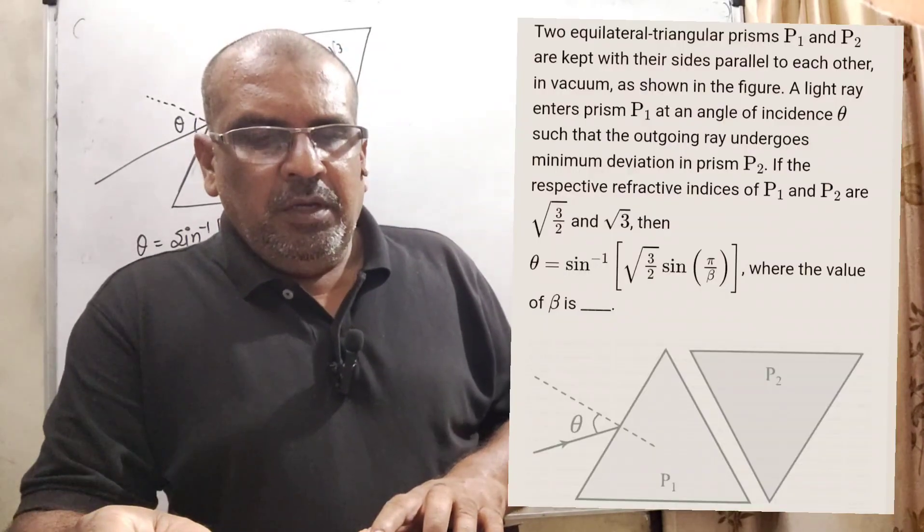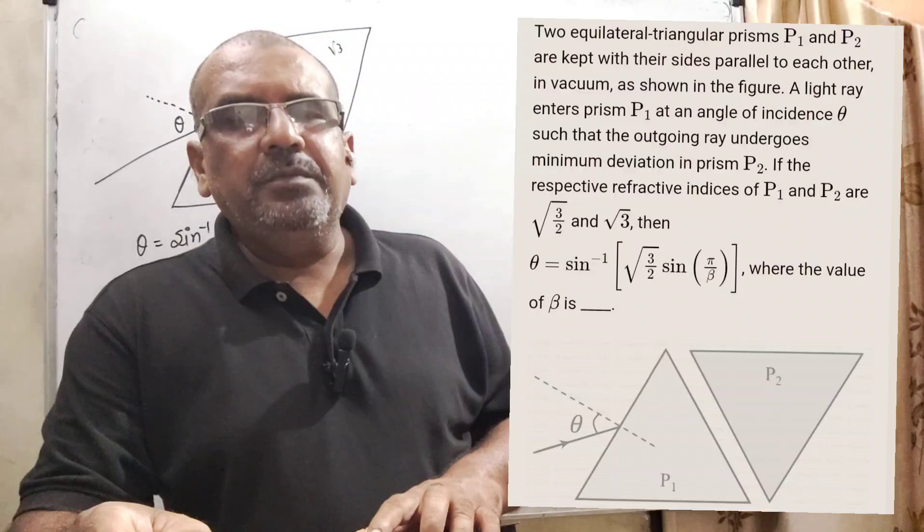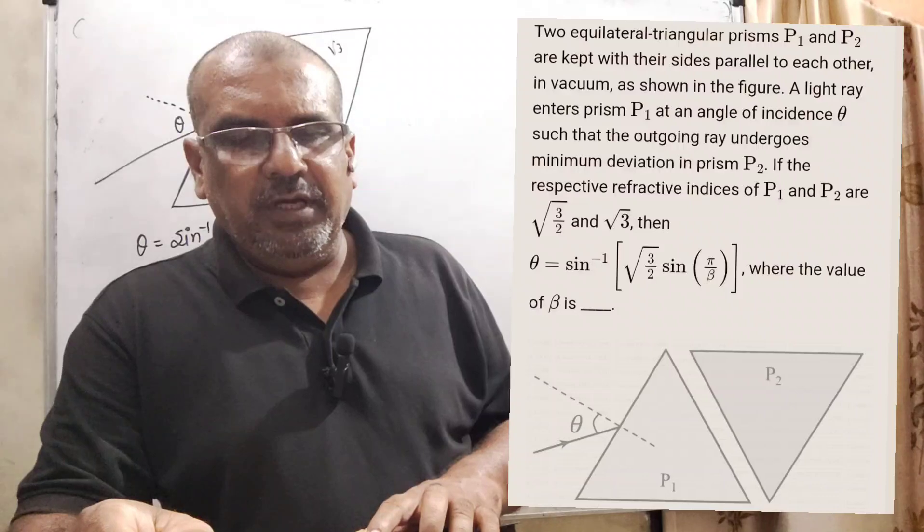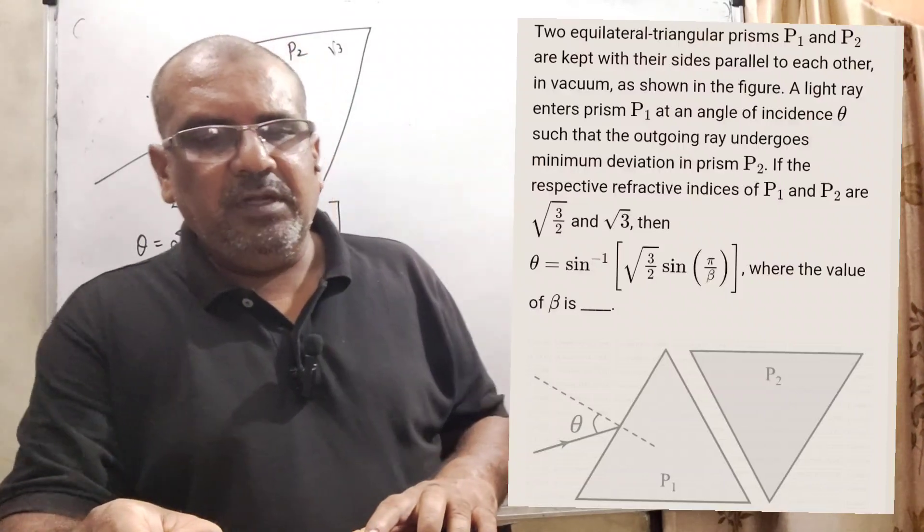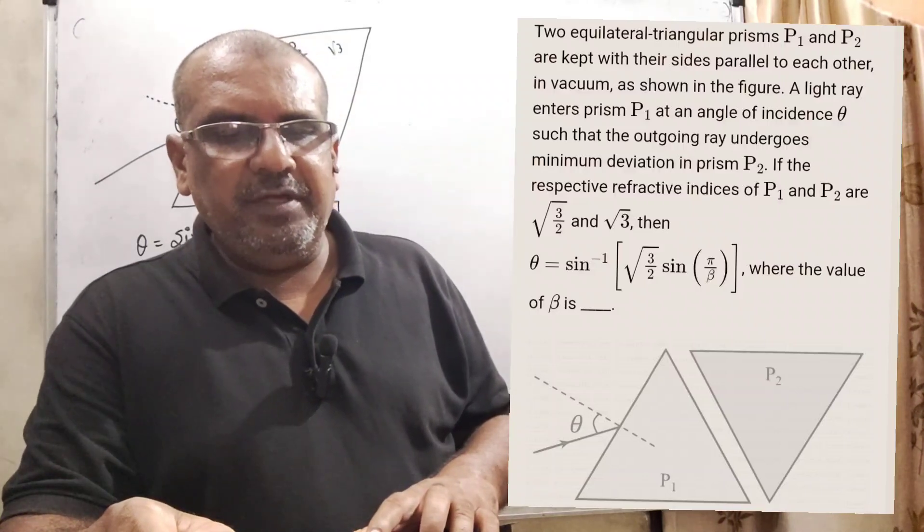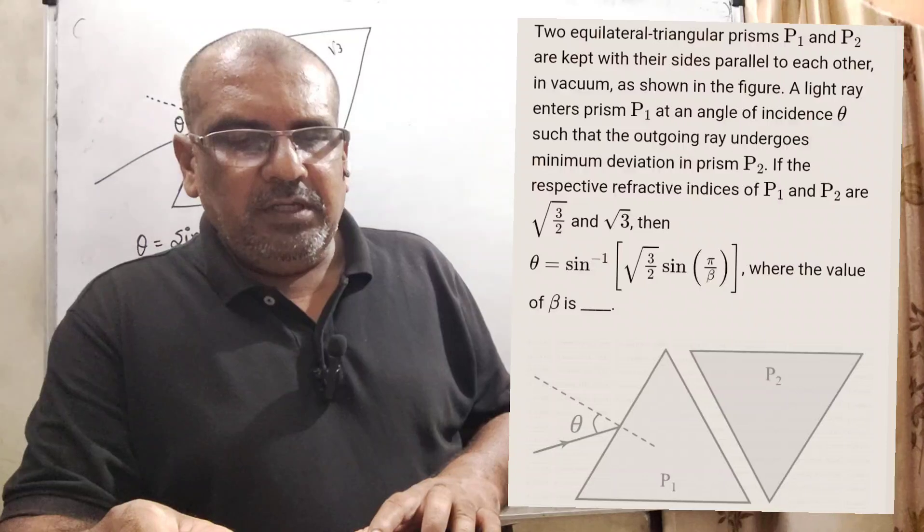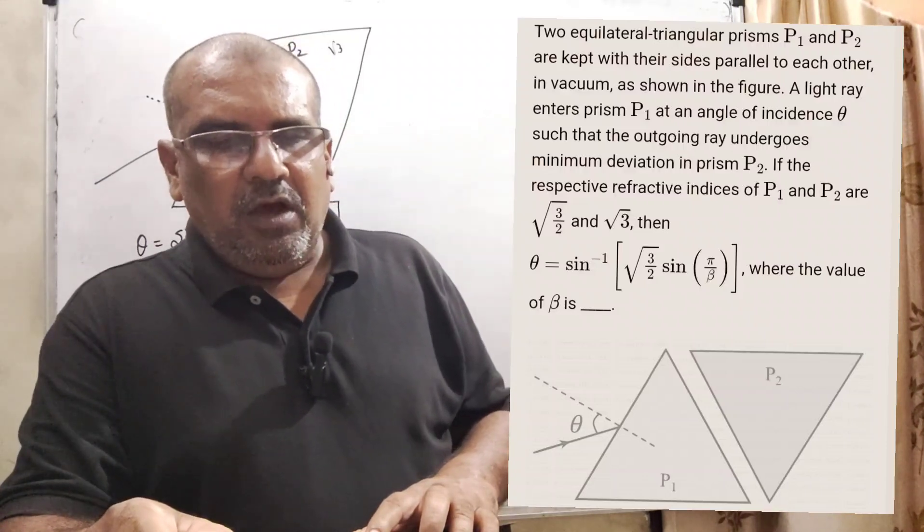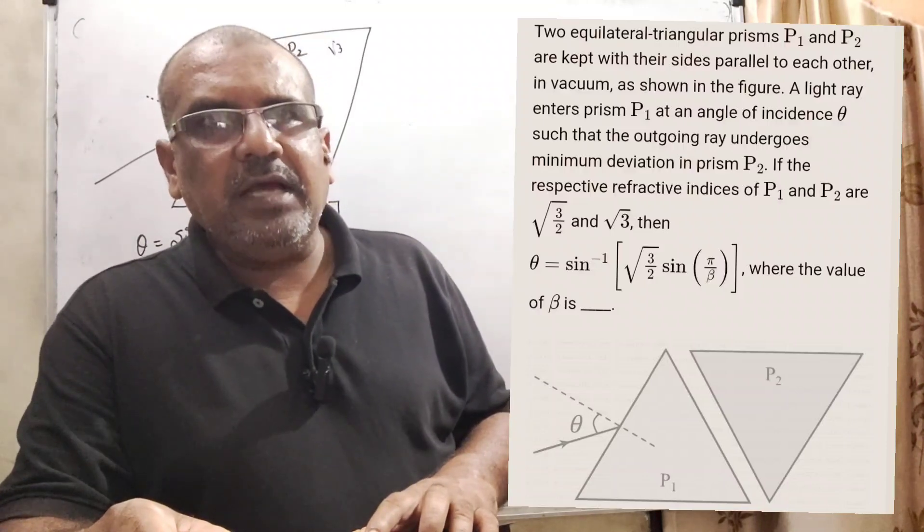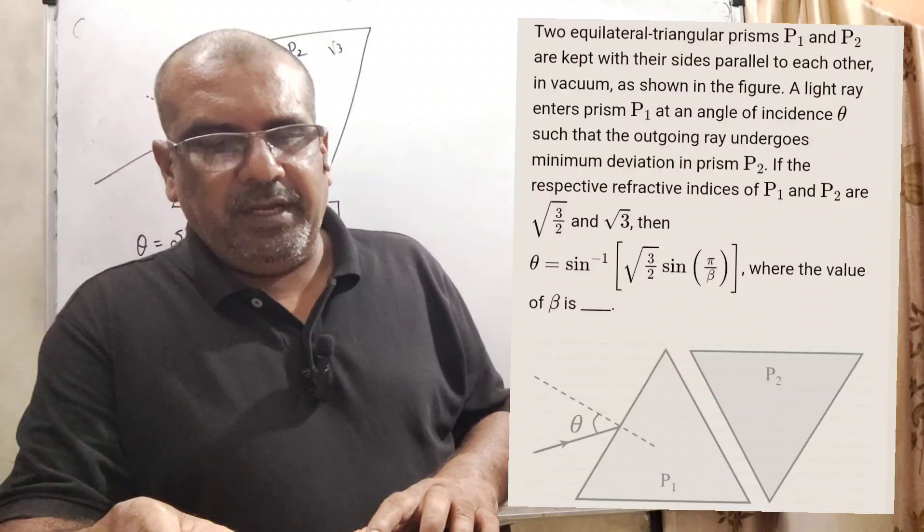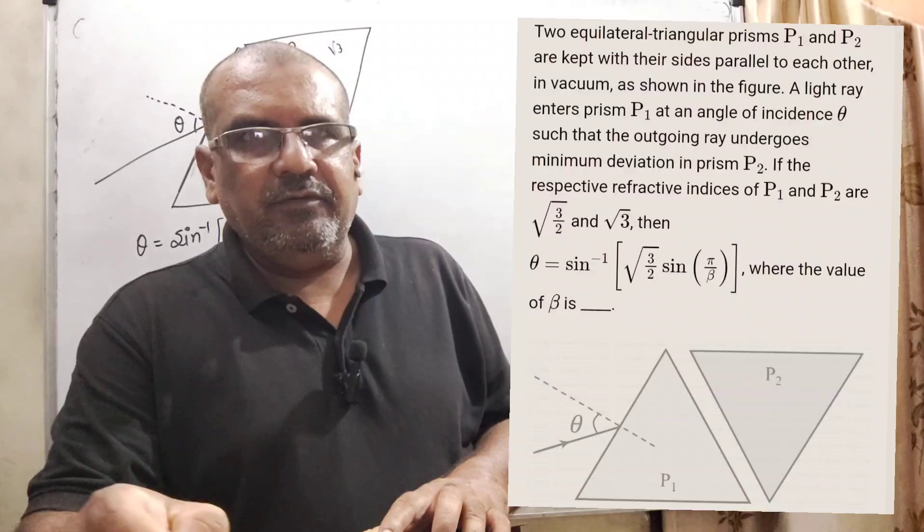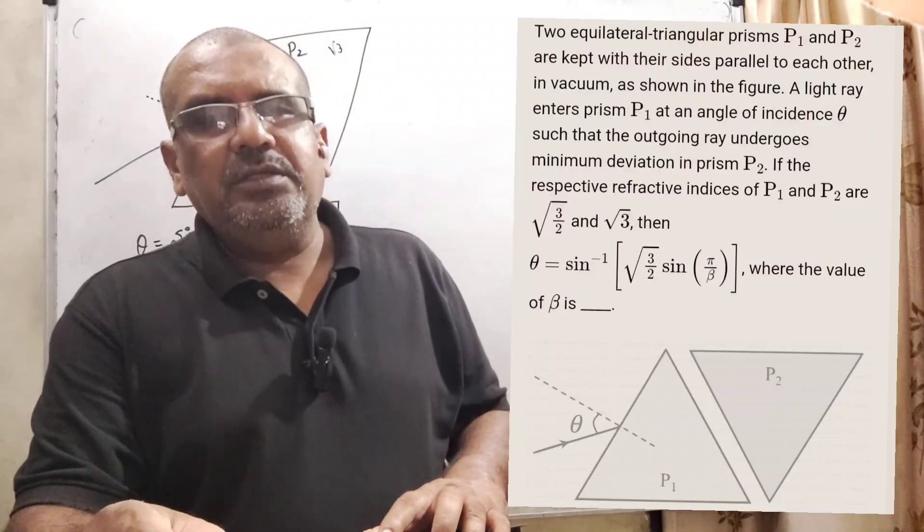Now here is the question. Two equilateral triangular prisms P1 and P2 are kept with their sides parallel to each other in vacuum as shown in the figure. A light ray enters prism P1 at an angle of incidence theta such that the undergoing ray undergoes minimum deviation in prism P2. If the respective refractive indices of P1 and P2 are root 3 by 2 and root 3, then theta is equal to sin inverse into bracket root 3 by 2 sin pi by beta, where the value of beta is fill in the blank. And this question is asked in JEE.